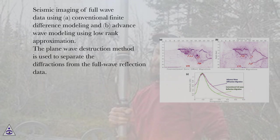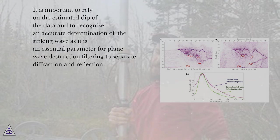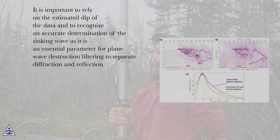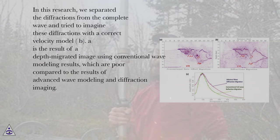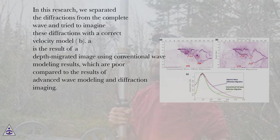The plane wave destruction method is used to separate the diffractions from the full-wave reflection data. It is important to rely on the estimated dip of the data and to recognize an accurate determination of the dipping wave, as it is an essential parameter for plane wave destruction filtering to separate diffraction and reflection. In this research, we separated the diffractions from the complete wave and imaged these diffractions with the correct velocity model. A shows the result of a depth-migrated image using conventional wave modeling results, which are poor compared to the results of advanced wave modeling and diffraction imaging.